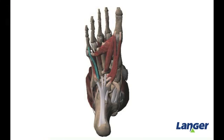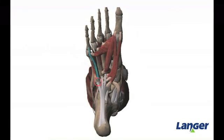The final muscle within the third layer is called the flexor digiti minimi brevis. This muscle originates on the base of the fifth metatarsal and inserts onto the base of the proximal phalanx. Its function is to flex the little toe.